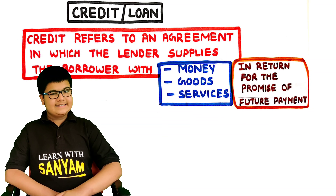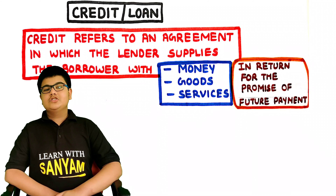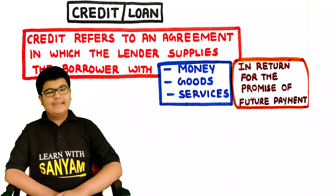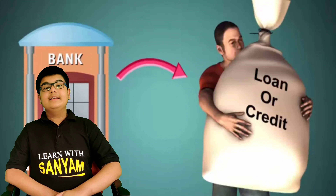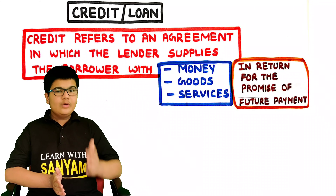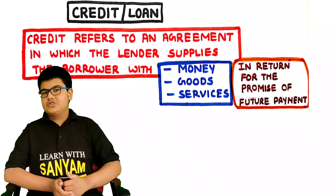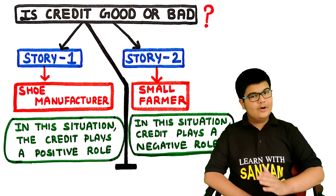Let's start by understanding the definition of credit. Credit refers to an agreement in which the lender supplies the borrower with money, goods or services in return for the promise of future payment. Credit is nothing but a loan, which refers to an agreement between the lender and the borrower, where the borrower has to return the lender's money after some time, and the lender charges some interest on it.